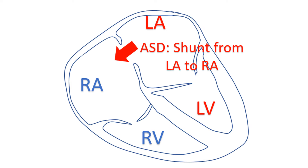When there is an atrial septal defect, there is a left-to-right shunt from the left atrium to the right atrium. The excessive load causes dilatation of the right atrium, right ventricle, and pulmonary artery. Pulmonary blood flow will be very high when there is a large atrial septal defect. The ratio between the pulmonary and systemic blood flows is known as the shunt ratio, which is more than 2 to 1 in large ASD.